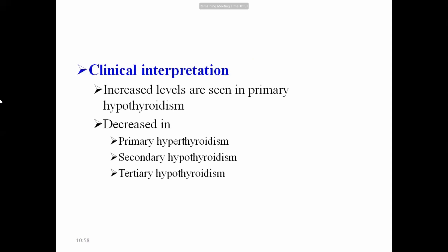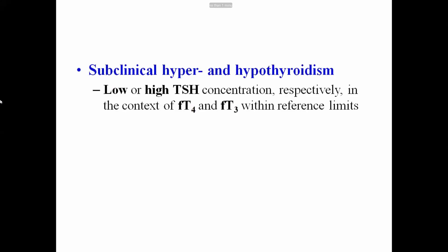In secondary hypothyroidism, where the pituitary gland is affected, TSH cannot be secreted or synthesized. In tertiary hypothyroidism, the hypothalamus is affected and cannot synthesize thyroid releasing hormone (TRH); in the absence of TRH, the pituitary cannot synthesize and secrete TSH, so TSH concentrations are decreased in circulation.